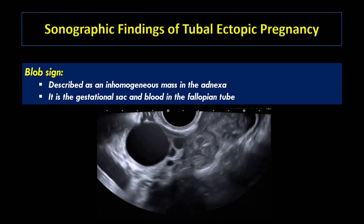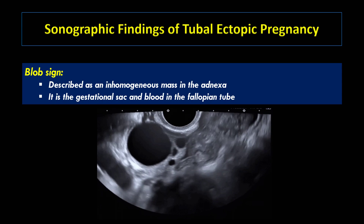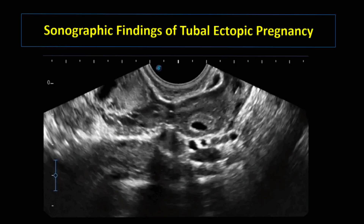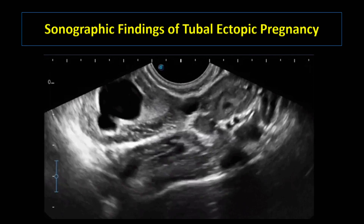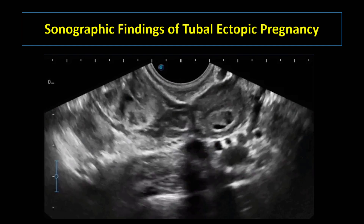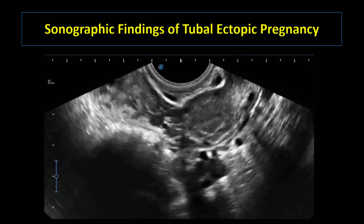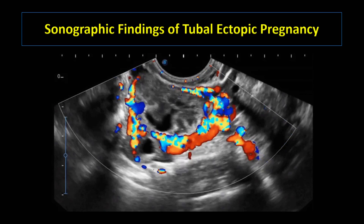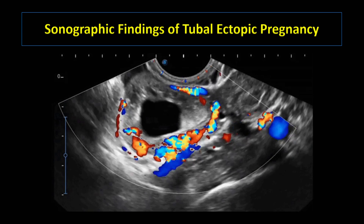This video clip shows another case of tubal ectopic pregnancy with a classic bagel sign. The adnexal mass here is inhomogeneous and separable from the adjacent ovary on gentle pressure by the ultrasound probe. There is also echogenic pelvic free fluid collection. The most common finding of a tubal pregnancy is an adnexal mass separate from the ovary, seen in up to 90% of patients. As you can see in this case, there is an adnexal mass with thick hyperechoic walls located medial to the left ovary, and the mass appears separate from the ovary on gentle pressure. This Doppler video clip shows peripheral hypervascularity surrounding the adnexal tubal ring — the ring of fire sign — which is a nonspecific finding that may also be seen surrounding a normal maturing follicle or a corpus luteal cyst.